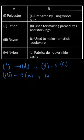And the last one that is 4. So in 4 we have nylon and what we know is that nylon this is used for making parachutes and stockings. So the correct match for 4 is B.